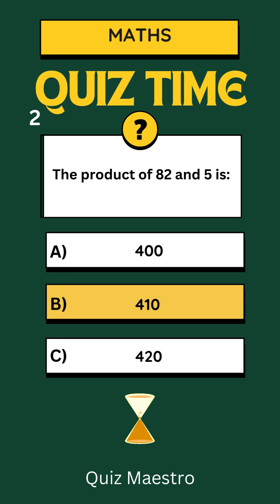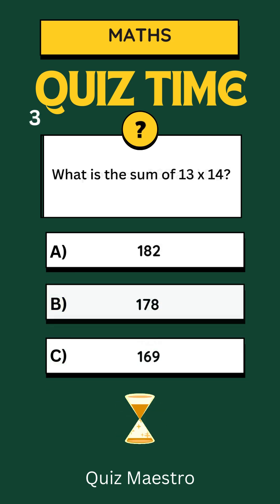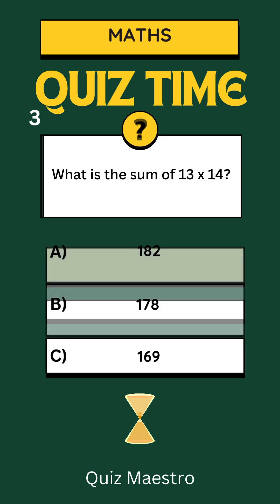410. Question 3: What is the sum of 13 times 14 — a) 182, b) 178, or c) 169? The answer